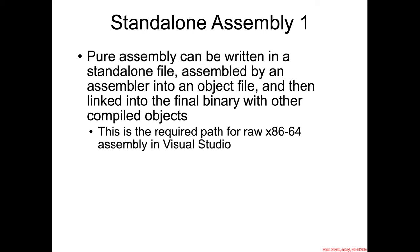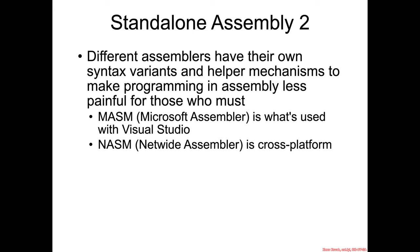Standalone assembly, on the other hand, is where you put all of your assembly into a separate file — not inside of the main C file you're working on — and then you have the assembler compile it, and that compiled object file gets linked in with the main binary. This is the path we actually have to use for Visual Studio if we want to write 64-bit assembly. Beyond syntax differences, assemblers also build in various helper mechanisms to give people easier ways to access global memory or call into functions.